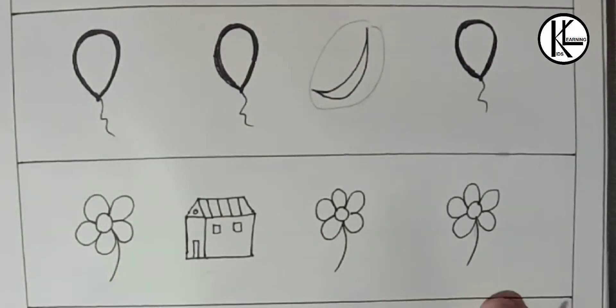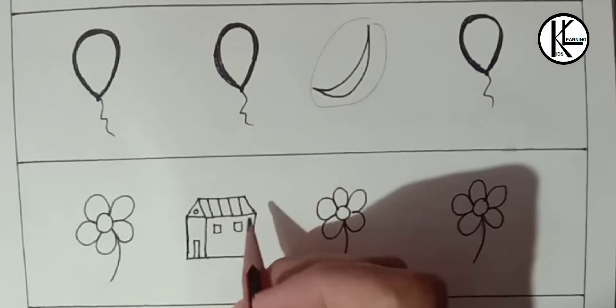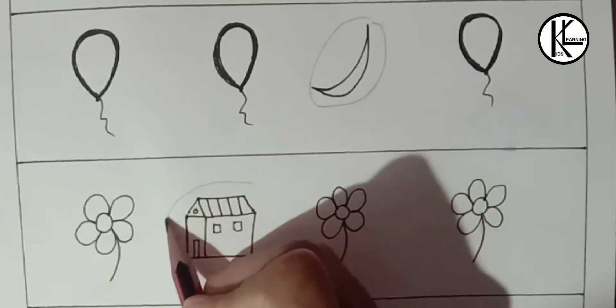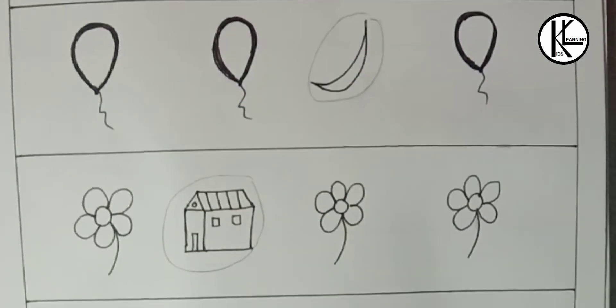After that we are having three flowers and one house. Obviously house is different. Kids have to circle this house.